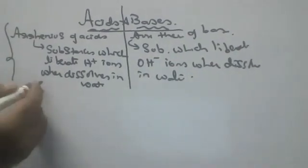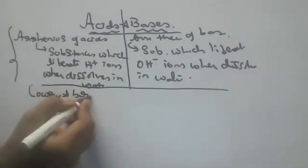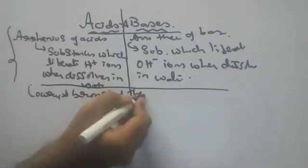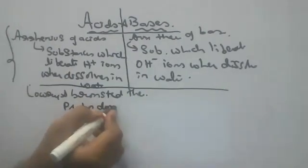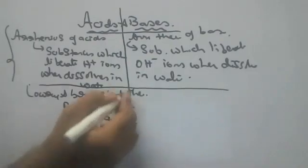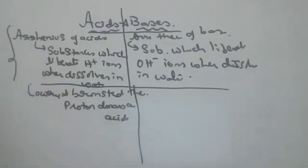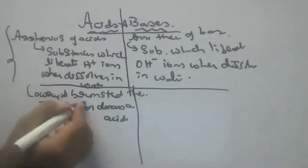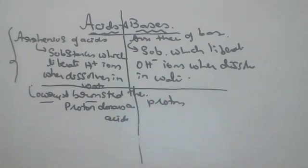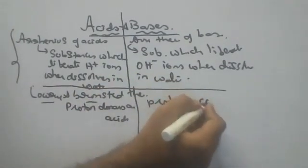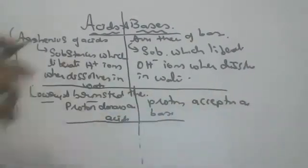The next theory is Lowry and Bronsted theory. Since H+ ions were problematic, they started discussing protons and electrons. Lowry and Bronsted said that proton donors are acids and proton acceptors are bases. However, this theory also became older because proton means indirectly H+ only.